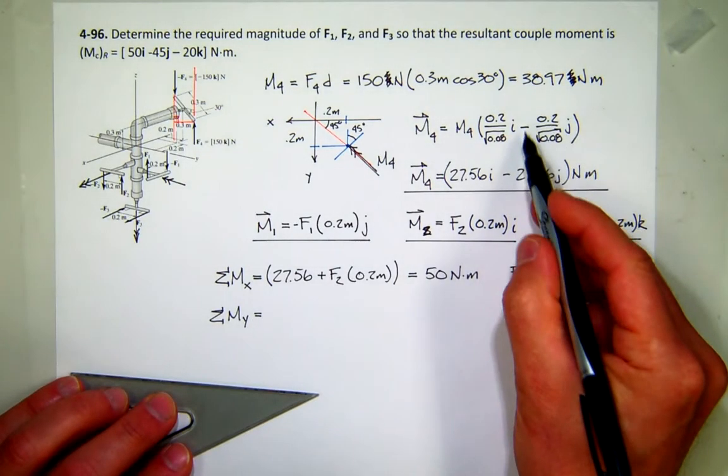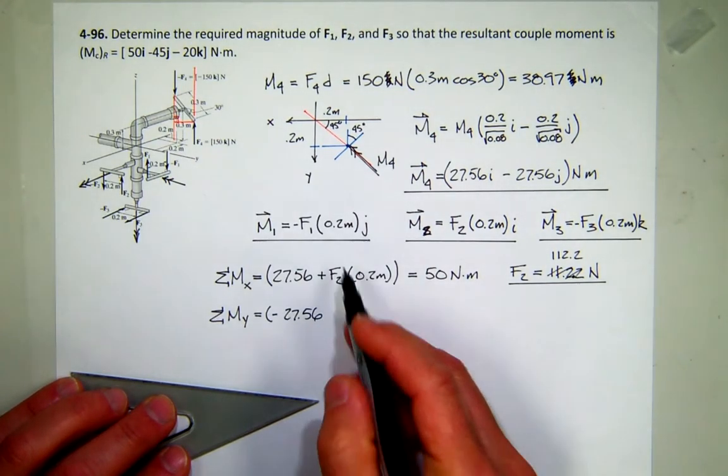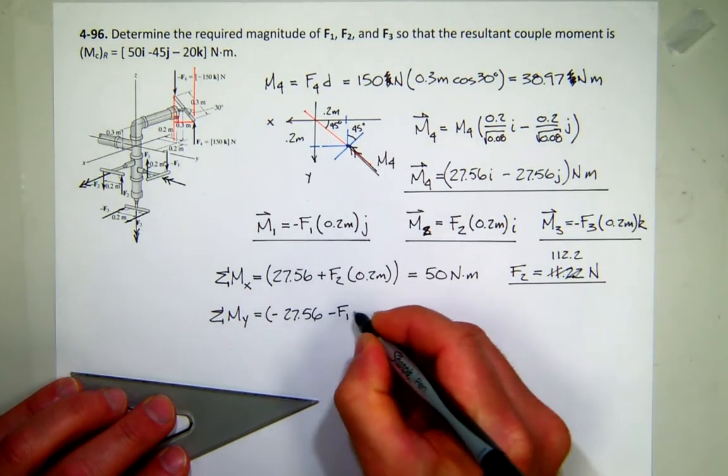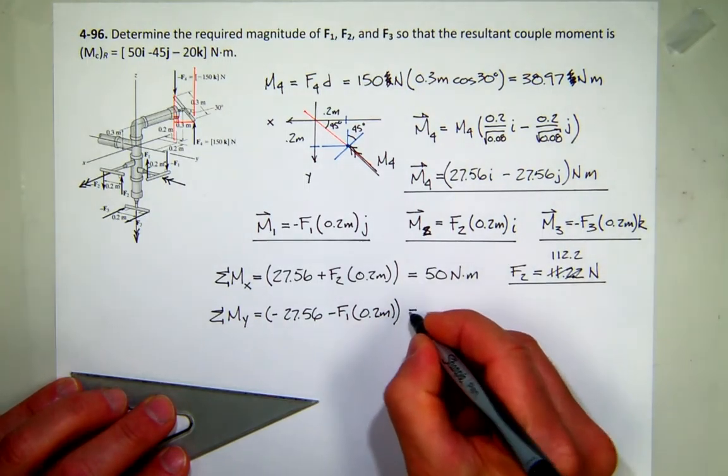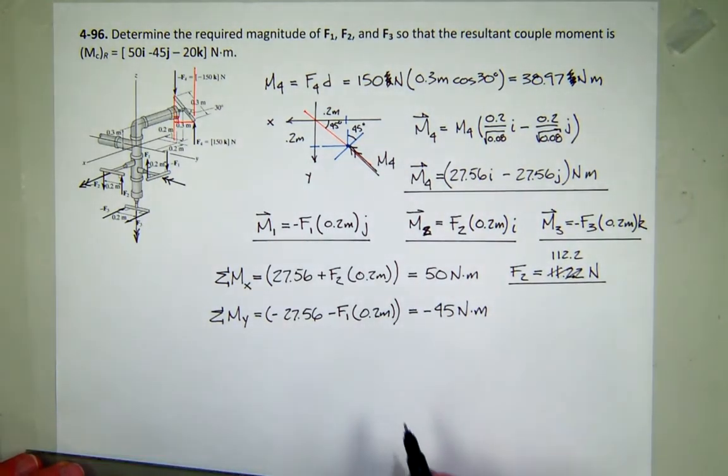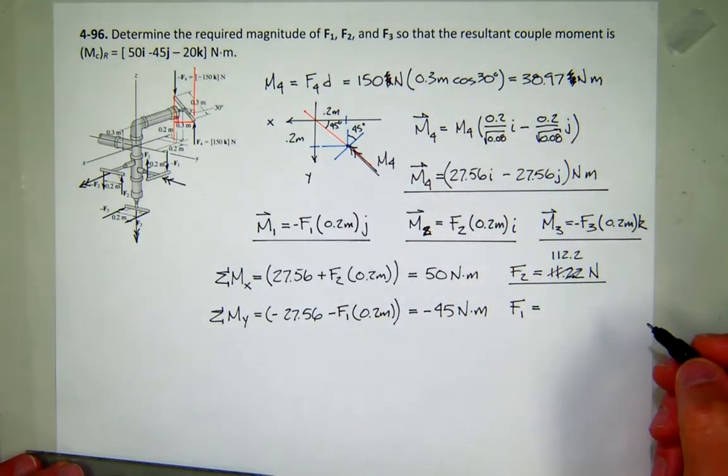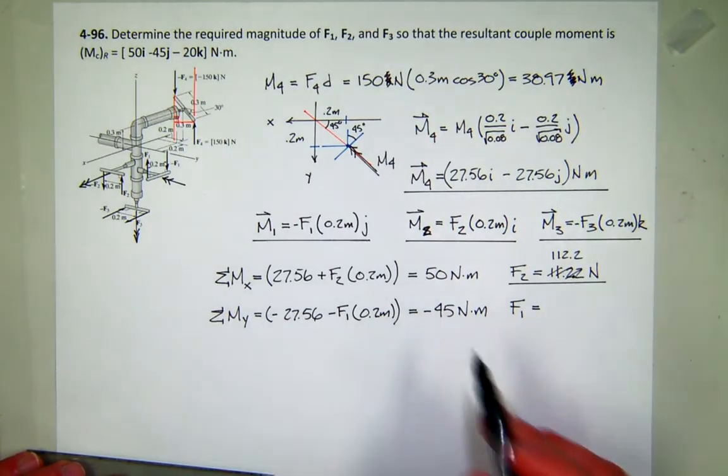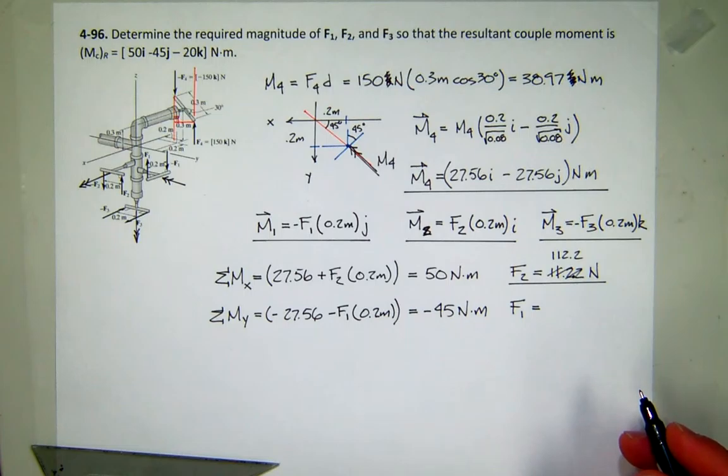So let's look at the components of the moment in the Y direction. So from this one up here, I get minus 27.56. And there's one. So minus F1 times 0.2 meters. And that should be equal to negative 45. So we should be able to solve for F1. So let's see what's going to be. Bless you. Thank you. Let's see. What's that going to be? I don't know. 80 something? Anybody get a number for that? 87.2. 87.2.